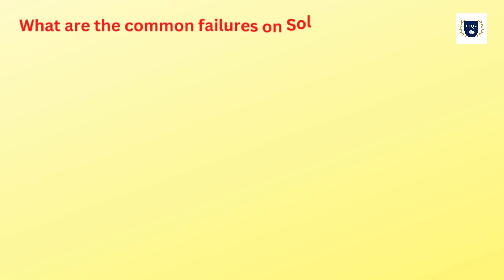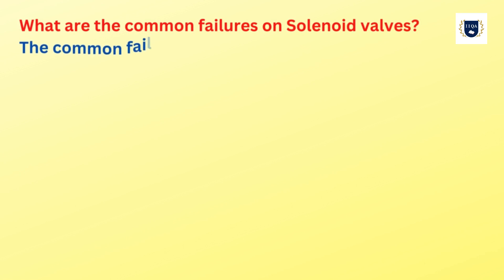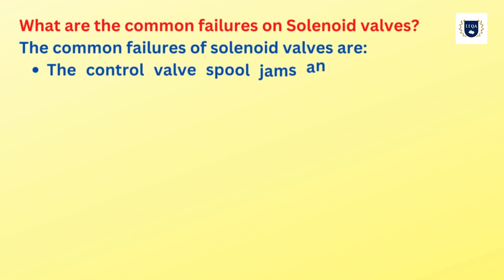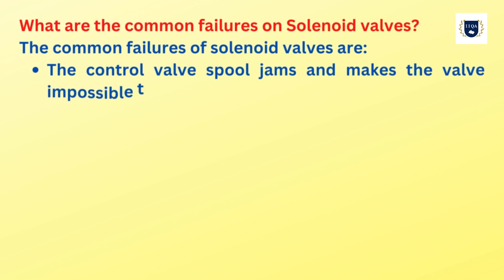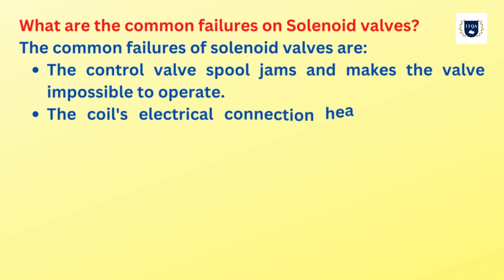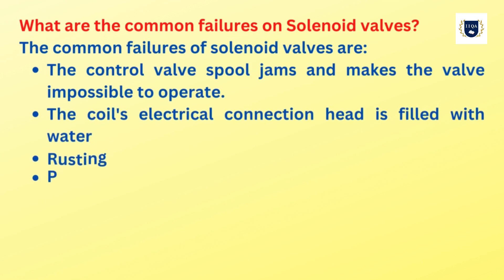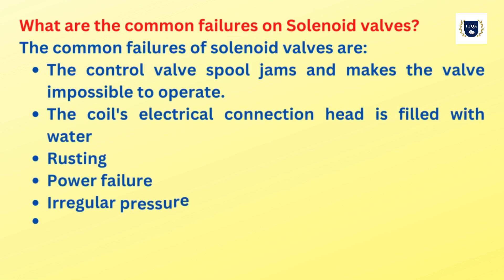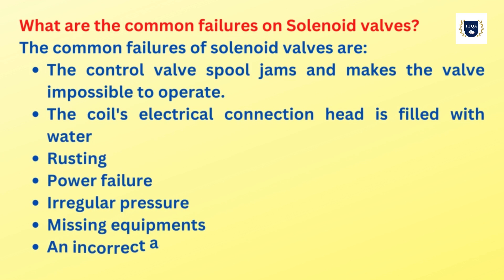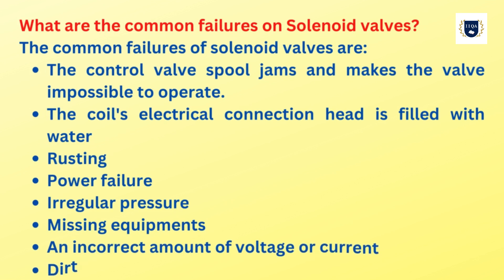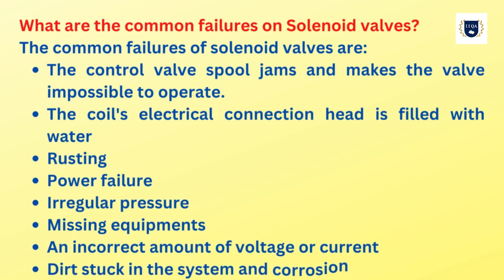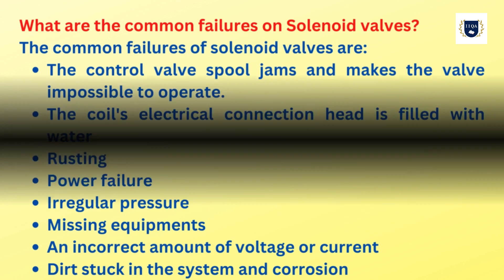What are the common failures of solenoid valves? The common failures are: the control valve spool jams and makes the valve impossible to operate; the coil's electrical connection head is filled with water or rusting; power failure; irregular pressure; missing equipment; an incorrect amount of voltage or current; dirt stuck in the system; and corrosion.